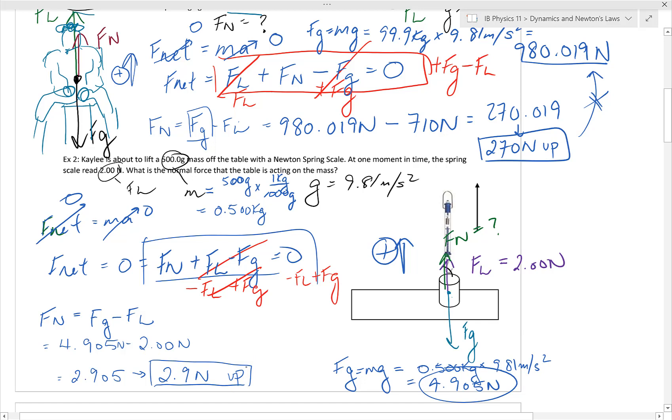All right, so now we have these solutions here. Notice that the mass was given in grams. We had to convert that to kilograms to use in our F net equals MA equation, which is Fg. So, that gave us 0.5 kilograms. Other than that, the problem is almost entirely similar to the one we had above.